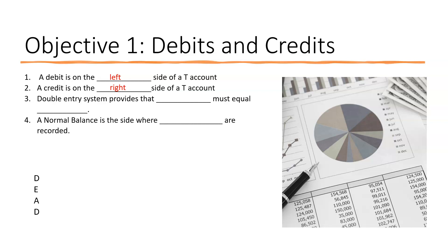A double entry system requires that debits must equal credits. Along with the accounting equation — assets equal liabilities plus stockholders' equity — that has to be in balance. Make sure you hit two accounts in that equation to keep it in balance, and within doing that, debits equal credits.